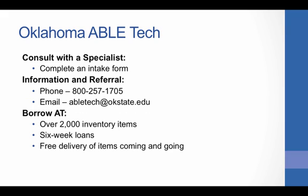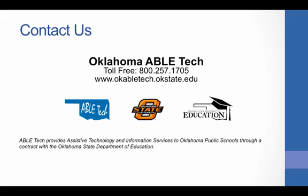When teams need help at any point in the SETT or reset processes, Oklahoma ABLE Tech is here to help. Families and school personnel are welcome to complete an intake form and submit it to Oklahoma ABLE Tech if additional consultation is needed to help determine the best AT solutions for a student. ABLE Tech is also a great referral source and on a daily basis helps numerous people in Oklahoma with information and referrals. When devices are needed for trial, ABLE Tech is the place to call — with over 2,000 inventory items, it is very likely ABLE Tech has what your student needs. If you have any questions or need help accessing and acquiring assistive technology in Oklahoma, please don't hesitate to contact us. Thank you so much and we look forward to hearing from you.